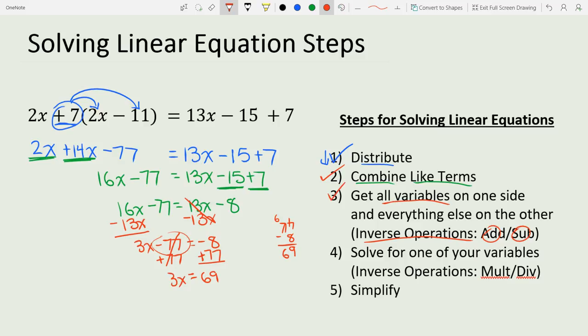We have 3x. Now we need to solve for one of our variables using inverse operations with multiplication and division. Since 3x represents 3 times x, we divide both sides by 3. 3 divided by 3 is 1, which is our goal. Now we simplify: 69 divided by 3. 3 goes into 6 twice, and 3 goes into 9 three times, so x equals 23. If we wanted to check it, we could plug it back into our original equation.